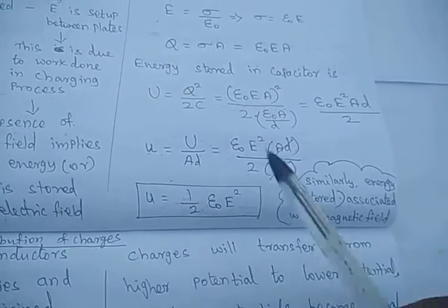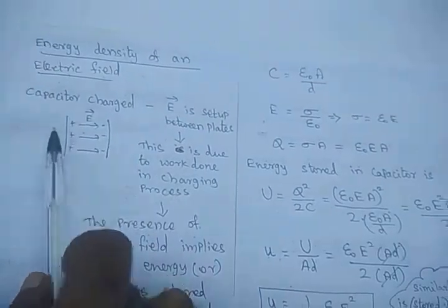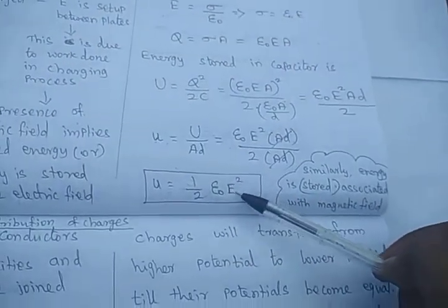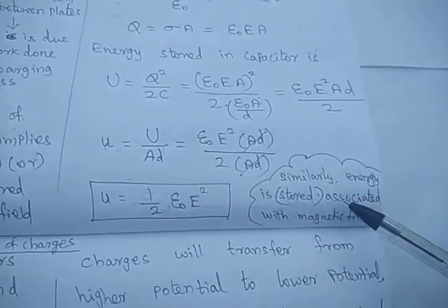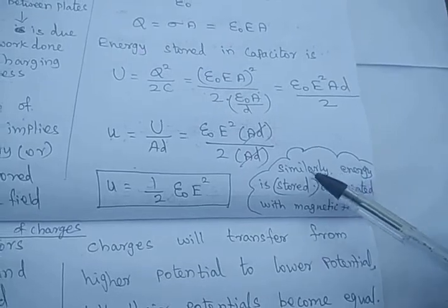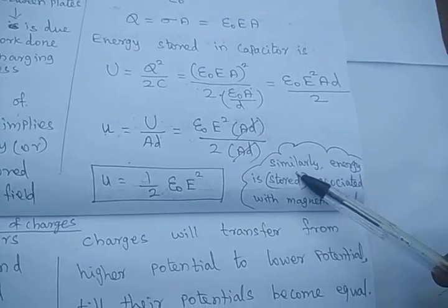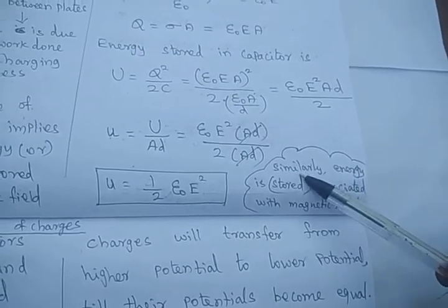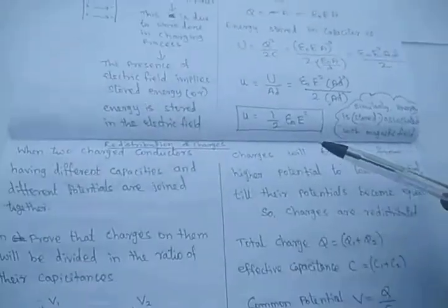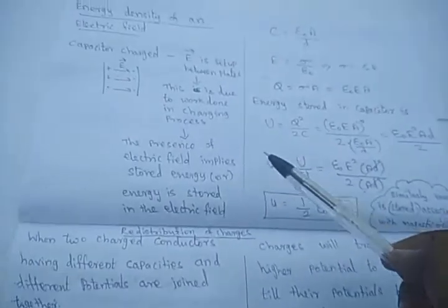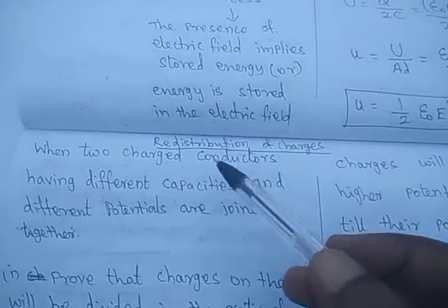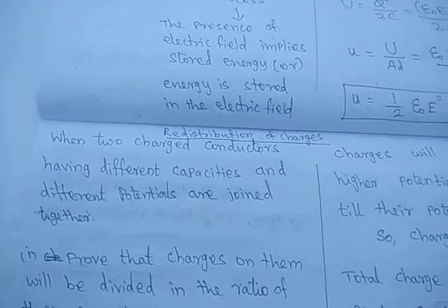This expression is also similar for capacitors. Not only is electric field energy stored — magnetic field energy is also stored. That expression we are going to see in the fourth unit. Now we are going to see about the redistribution of charges.